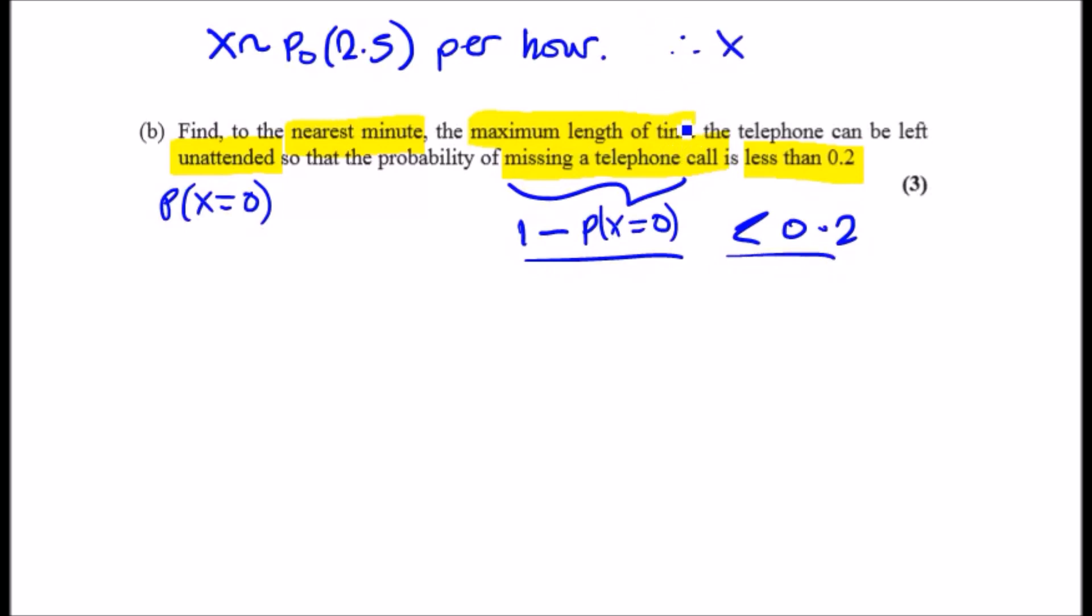We also need a new distribution as well because we're working a time. Let's let the new time variable be t, because we want to find out exactly how many hours per t. So x is a Poisson distribution with mean 2.5t per hour. So once we work out the t value we can work out the number of minutes that can be missed. So let's have a go. Okay, hopefully you guys are following me with this one.